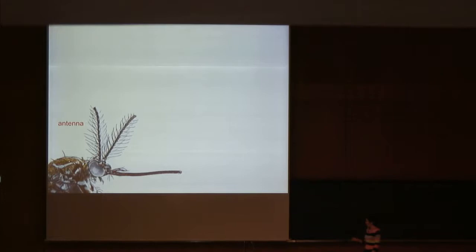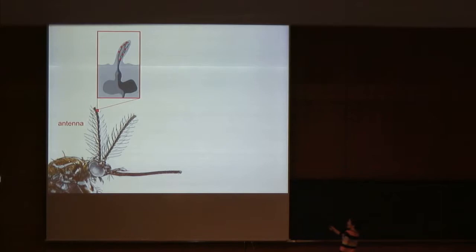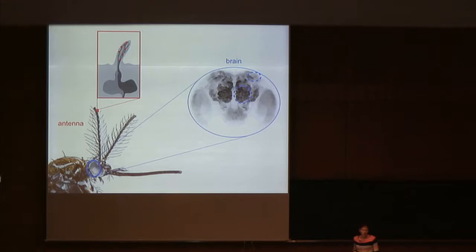The main olfactory organ of the mosquito is the antenna, though they can also smell with the maxillary palp. These sensory organs are covered with hollow cuticular hairs called sensilla that house the dendrites of olfactory sensory neurons. Each sensory neuron expresses a specific odorant receptor that determines what odors that neuron will respond to. One possibility is that the tuning of these sensory neurons has evolved to make domestic mosquitoes more sensitive to attractants in human odor or less sensitive to aversive compounds. Circuits in olfactory processing areas of the brain must integrate information about the individual components of human odor to generate a host percept.